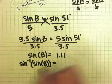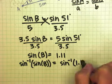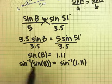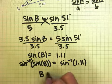I inverse the left and I inverse the right. When I do that, an inverse function and a function cancel each other out and just leave you with B.